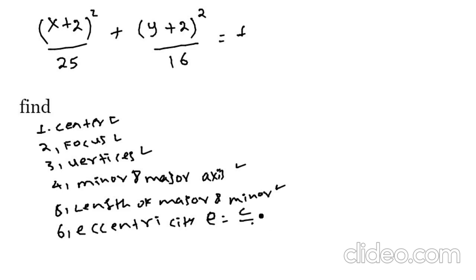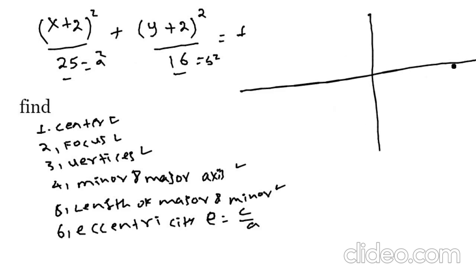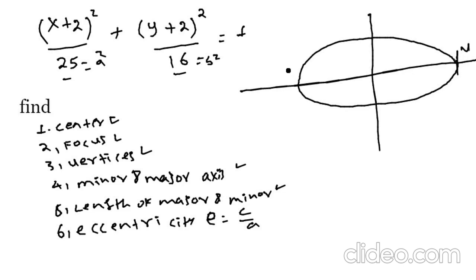Eccentricity formula: e equals c over a. The denominator is equal to B and E. Here, where is A? This identifies whether A or B is equal to E. A is equal to E, and this denominator is equal to E. If we have the major axis length graph, the x horizontal axis graph has vertices.